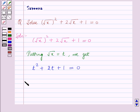This implies we will split the middle term, so it will be t² + t + t + 1 = 0.